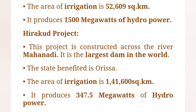The Hirakud project is constructed across the river Mahanadi. It is the largest dam in the world. Area of irrigation: 41,600 square kilometres. It produces 347.5 megawatts of hydropower.